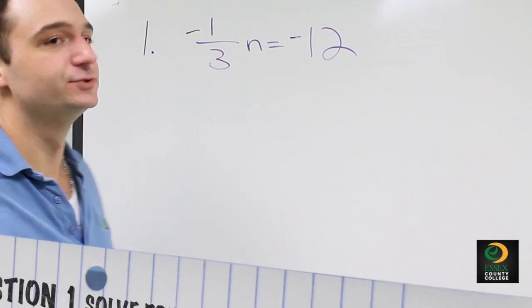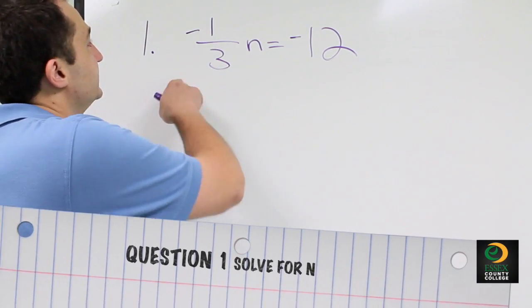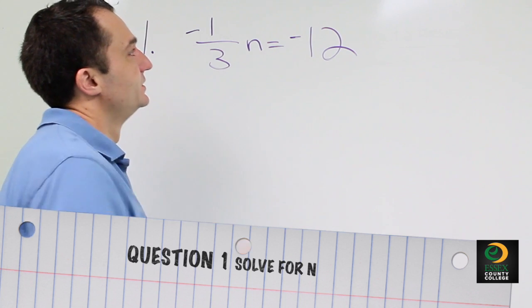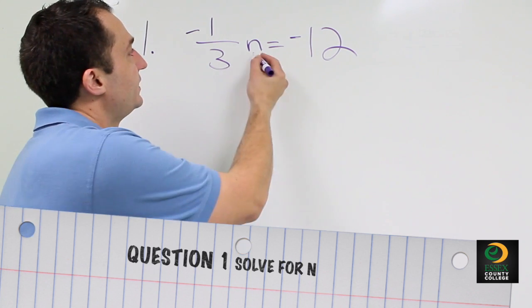The first problem in the Math 100 midterm review is negative 1 third n is equal to negative 12 and it asks us to solve for n.